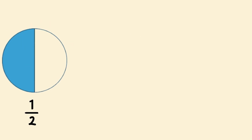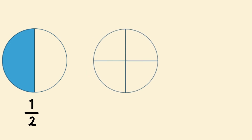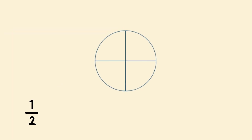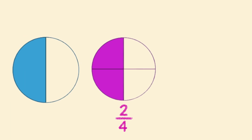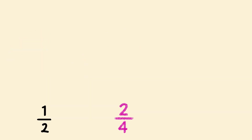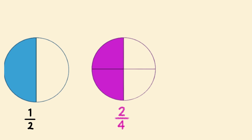Let's use the same circle again, but instead of having two equal parts, let's cut it into four equal parts. We now have four quarters. If we shade two parts out of the four, what do you notice? The same amount has been shaded.